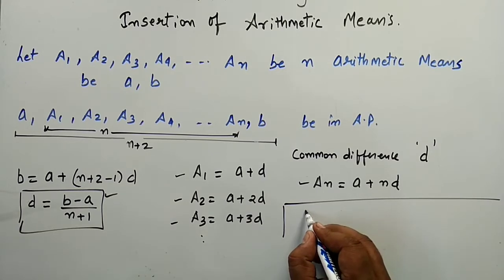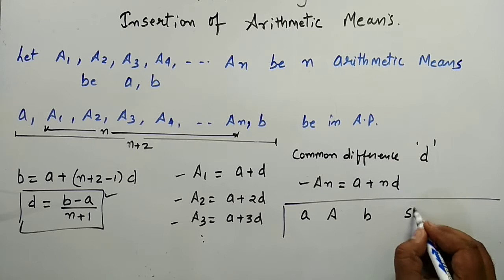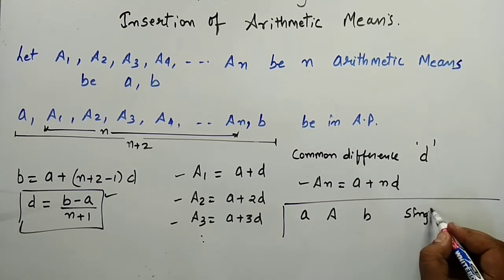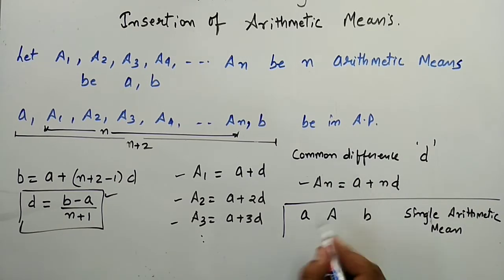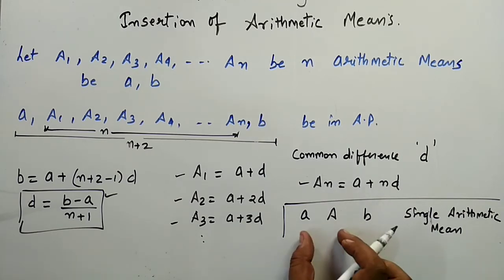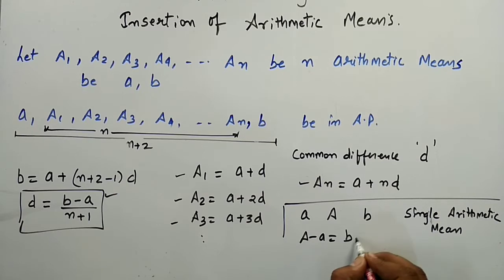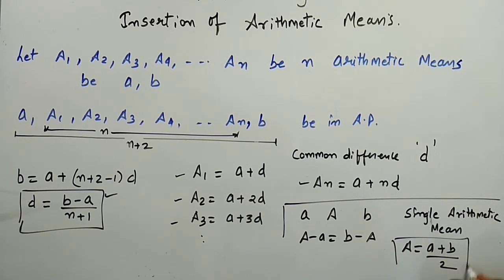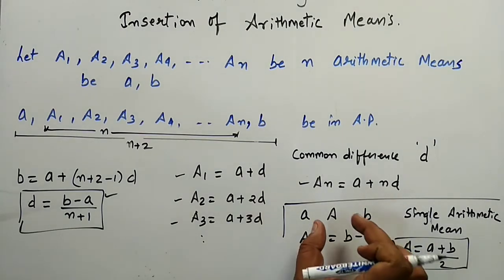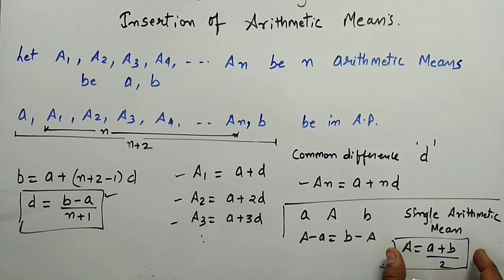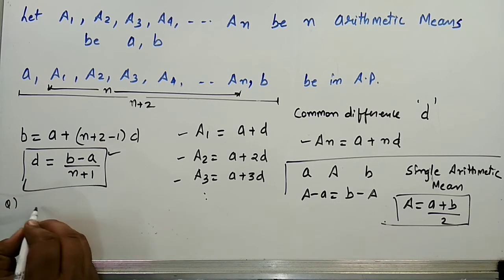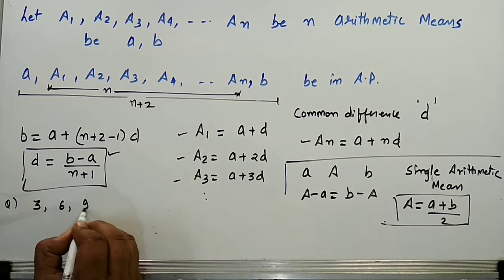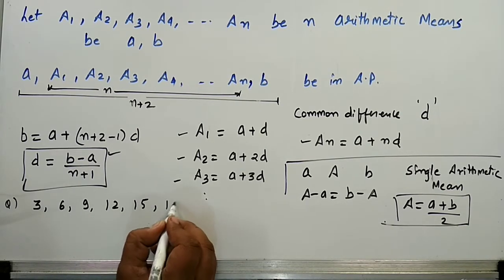Suppose we are given two numbers a and b and we have to insert a single arithmetic mean A between a and b. If these are in AP, then A minus a equals b minus A, and clearly we can calculate that A would be equal to (a plus b) by 2. So if you are inserting a single arithmetic mean between two given numbers, it will be equal to (a plus b) by 2.